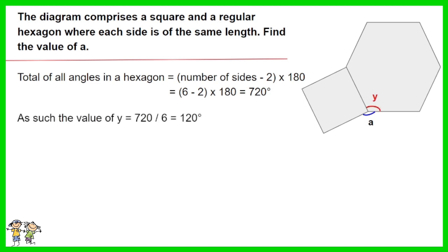As such the value of Y is 720 divided by 6 equals 120 degrees. Thus A is equal to 360 minus 120 minus 90. The answer is 150 degrees.